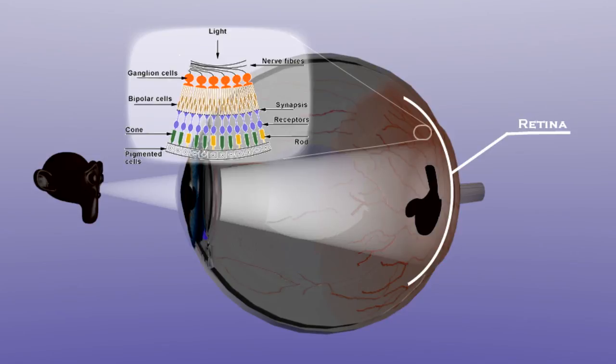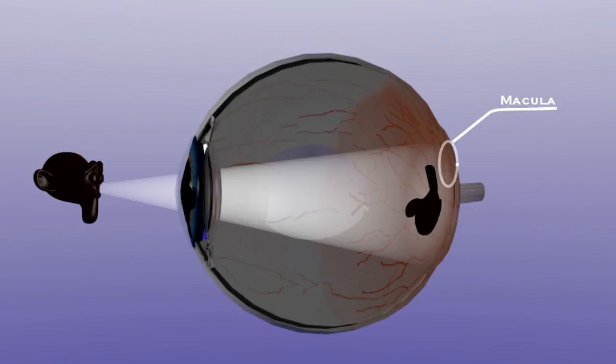There are approximately 6.5 million cones in the human eye and these are more concentrated in the macula, most densely in the fovea. Cones are essential for vision in bright light and for seeing colors.